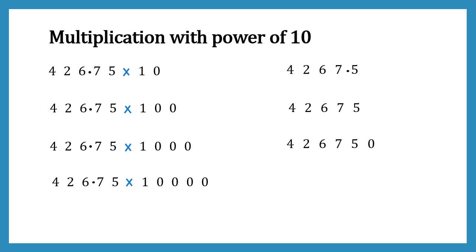Now let's multiply by 10,000, which means shifting the decimal point four places to the right. We add two zeros and shift, then remove the decimal point since no digits remain on the right. So friends, we have seen the multiplication of the same number with different powers of 10. It is really really easy — we just have to take care of shifting the decimal point.